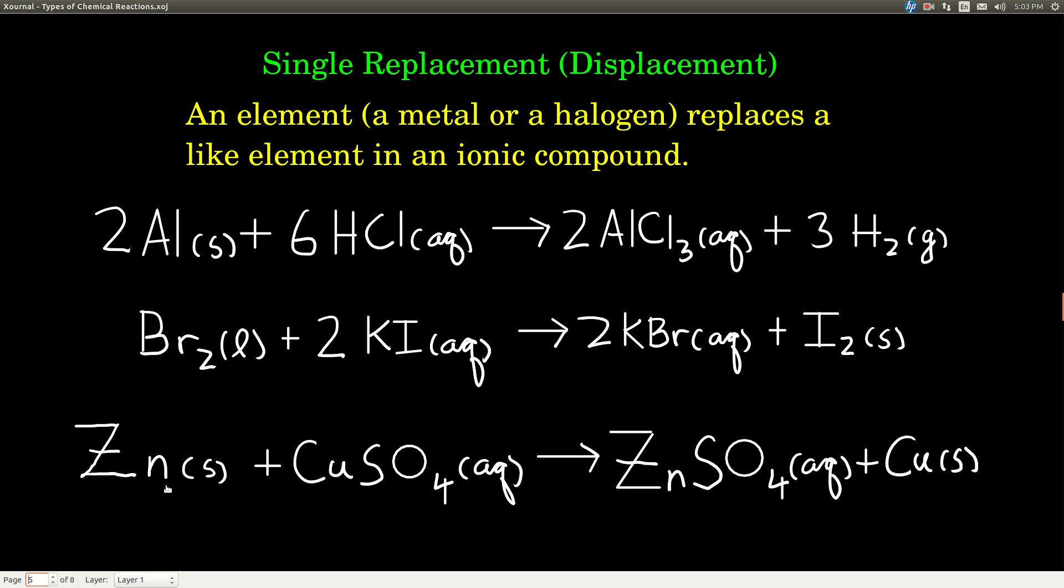And here, this is another example that you may have seen in lab. That's zinc metal and copper 2 sulfate aqueous. Here, the zinc displaces the copper and becomes zinc sulfate and solid copper. Now, in a single displacement reaction, if it happens in one direction, so the zinc will displace copper and you'll see zinc sulfate and copper metal, it will not happen in the reverse reaction. So if we were, for some reason, to take copper metal, put it into a solution of zinc sulfate, nothing would happen. So these single replacement reactions only go in one direction.